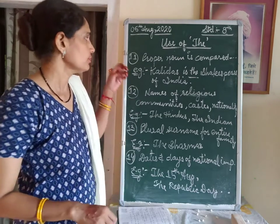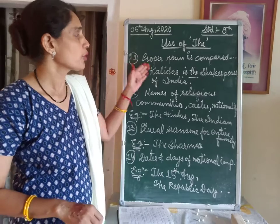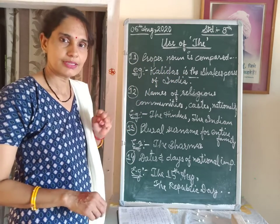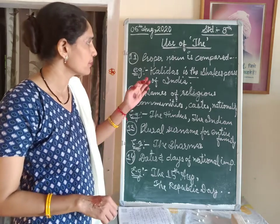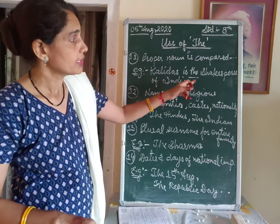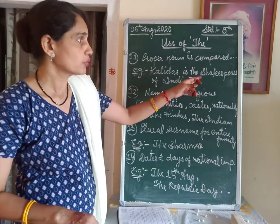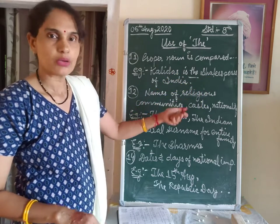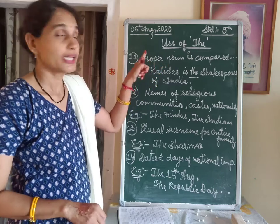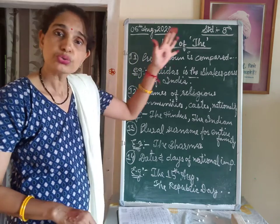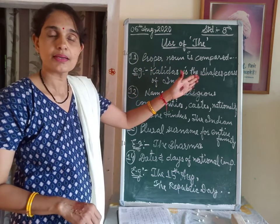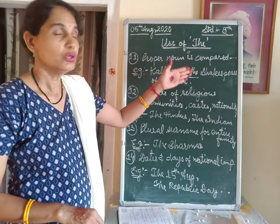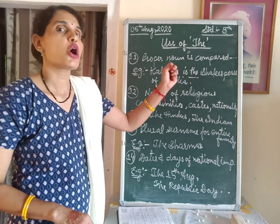The 11th use is: before a proper noun that is compared with another well-known, well-renowned proper noun that acts as a common noun. When a proper noun is compared with another well-renowned proper noun, that second proper noun is called a common noun.